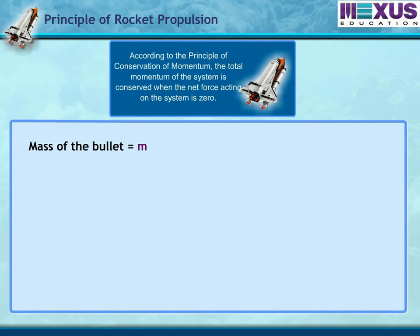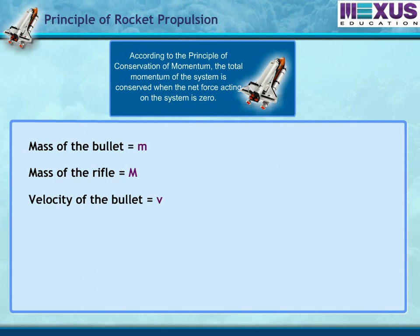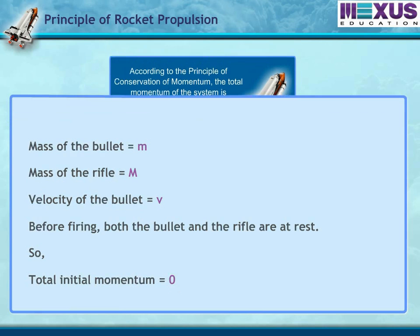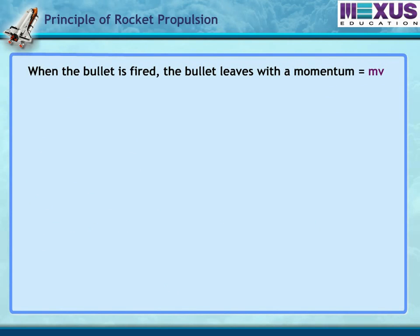Consider the following case. Let the mass of a bullet be m and the mass of a rifle be M. Let the velocity of the bullet be V. Before firing, both the bullet and the rifle are at rest, so the total initial momentum is equal to zero.